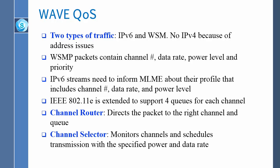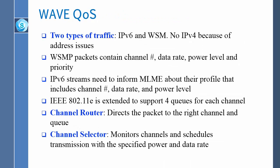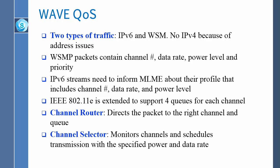IPv6 streams need to inform the MLME — the MAC Layer Management Entity — about their profile, because IPv6 cannot directly specify channel number, data rate, or power level. Instead, applications tell the management layer sideways, specifying requirements such as needing to communicate with a vehicle half a mile away, so power can be set accordingly.